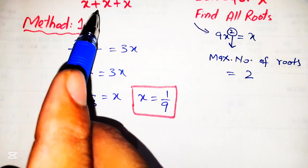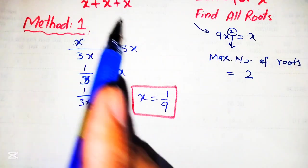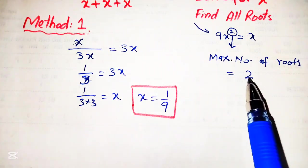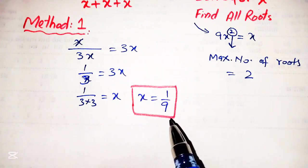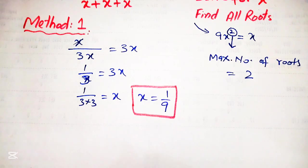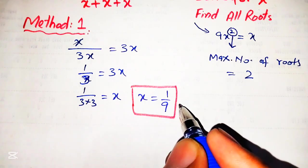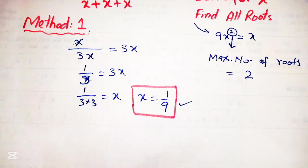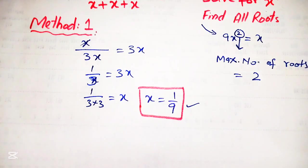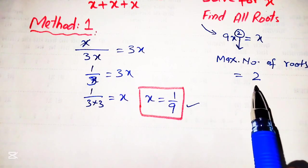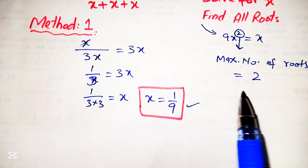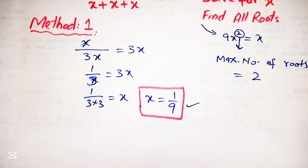Whereas actually this equation has two maximum number of roots, but there is only one root found by method 1.